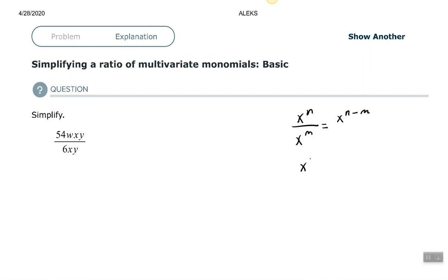So a quick example, if I have X to the fourth over X to the understood first, to simplify that I would subtract the one from the four, which will give us X to the third.